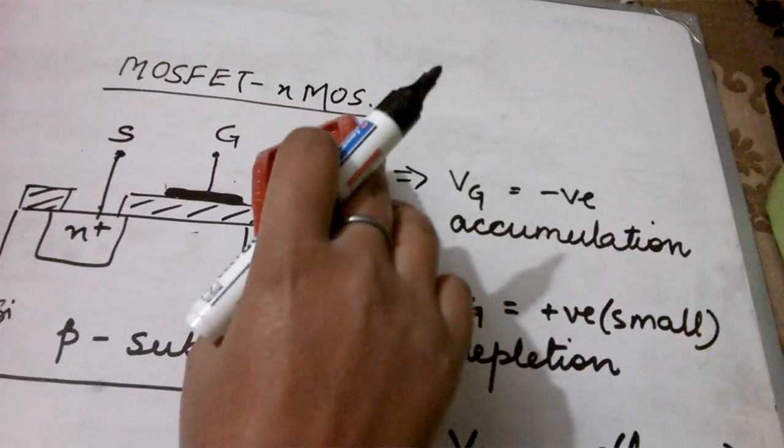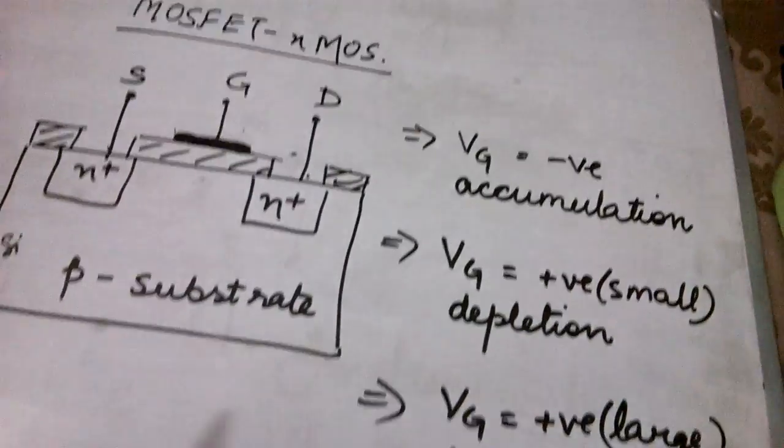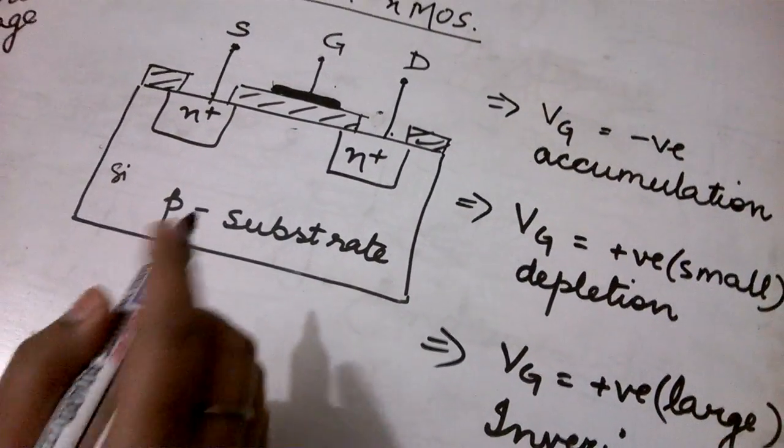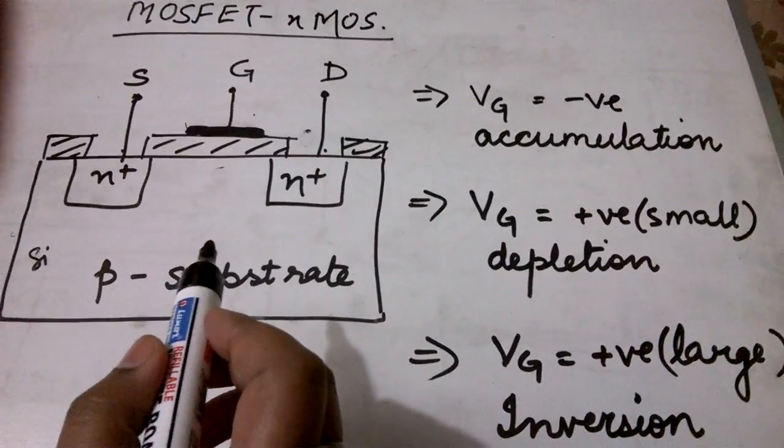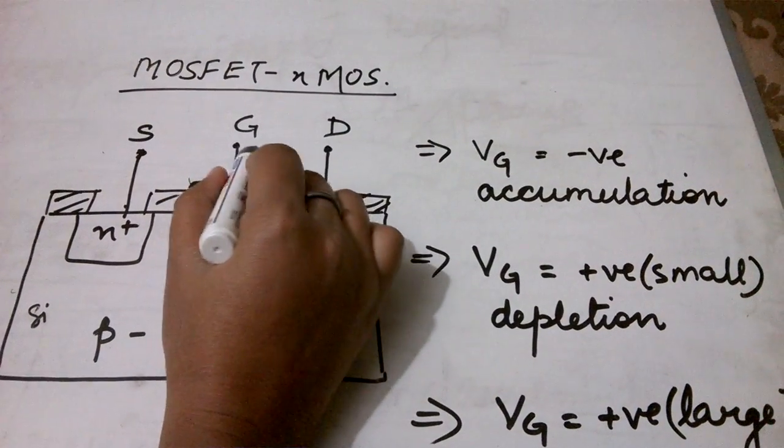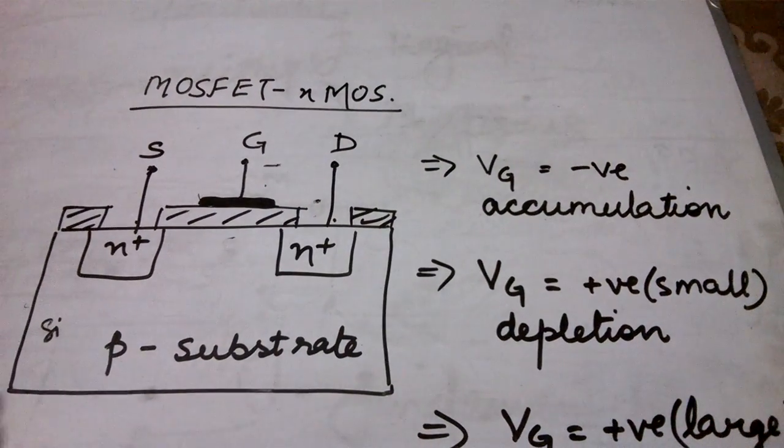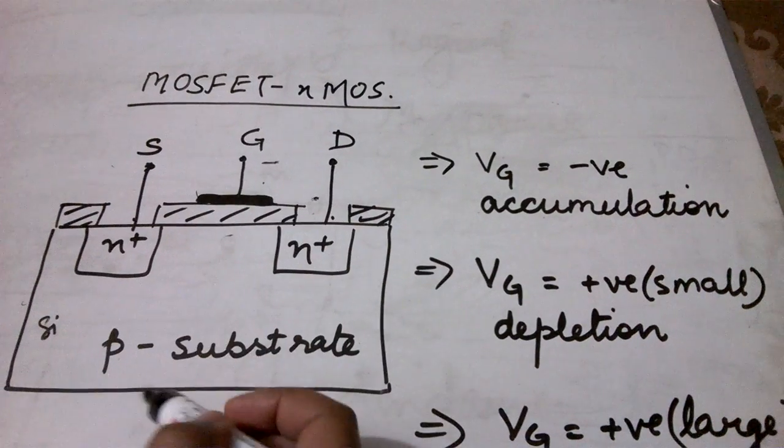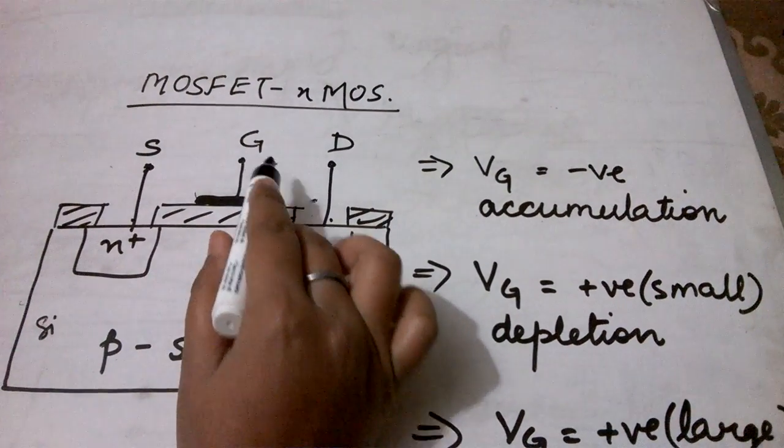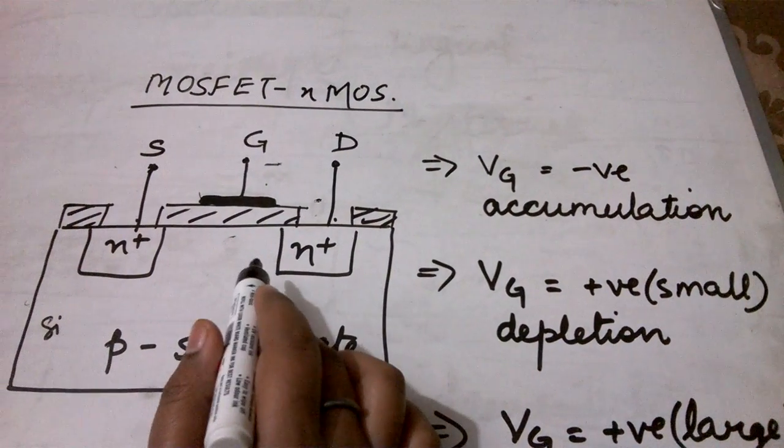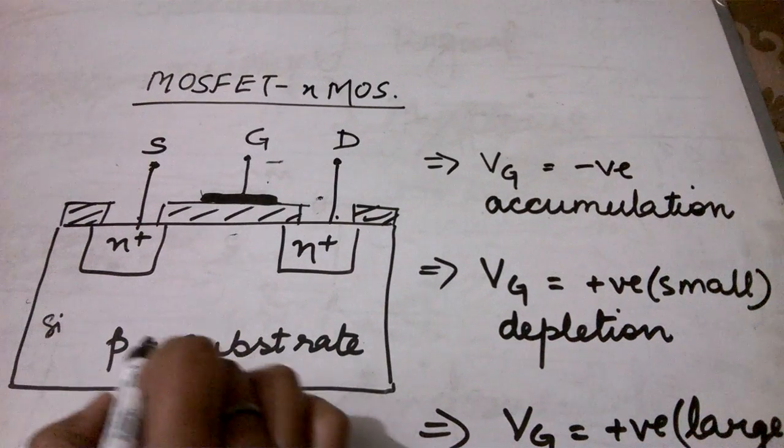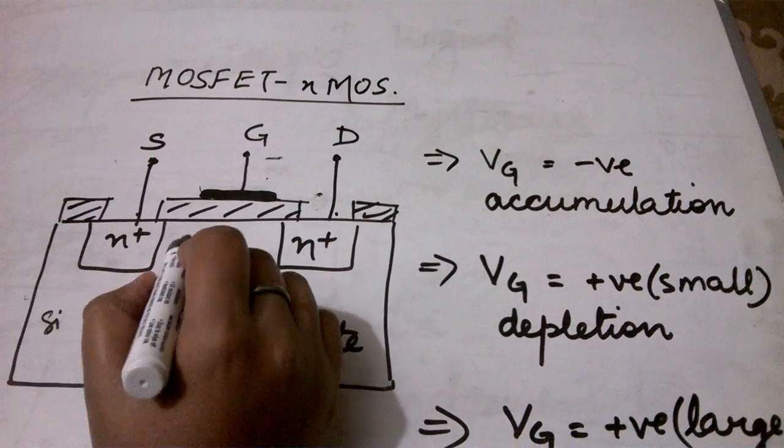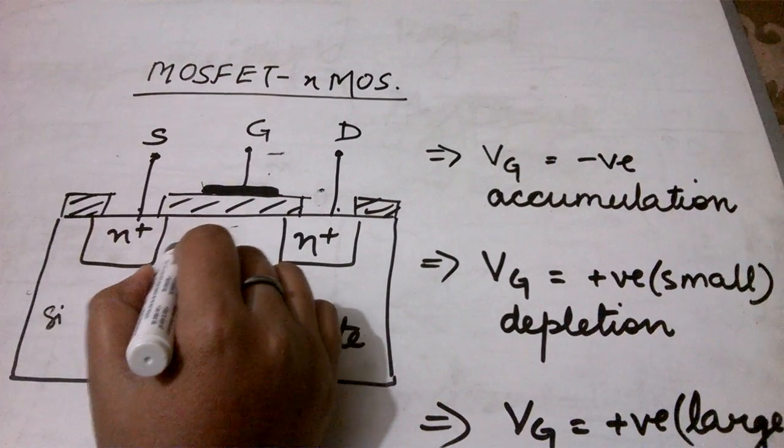Now the first part is accumulation. Now suppose I apply a negative voltage on the gate terminal. So when I apply a negative voltage, negative charge is going to attract the positive carriers. So basically this is a p-type substrate. So what will be attracted here? Holes will be attracted here.